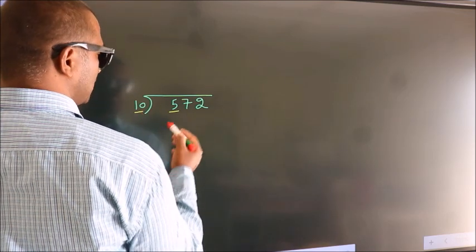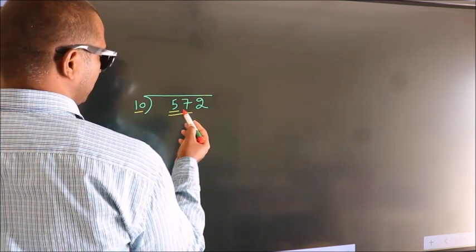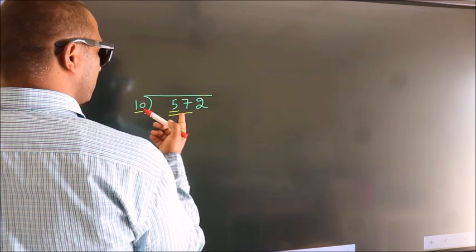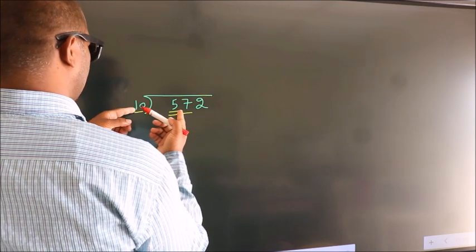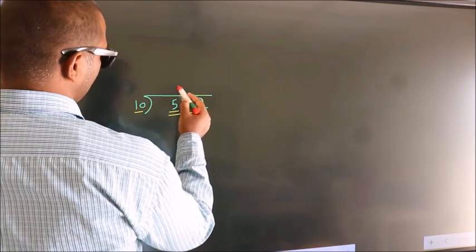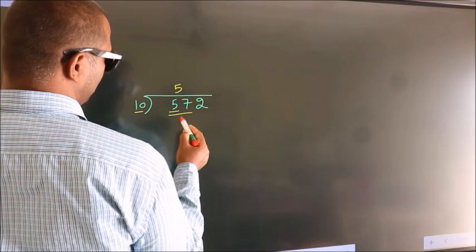So we should take two numbers, 57. A number close to 57 in the 10 table is 10 fives, 50.